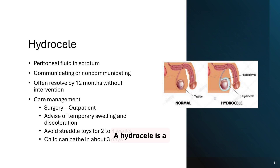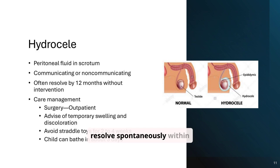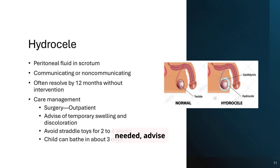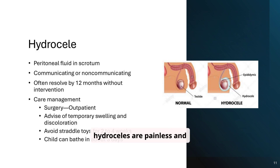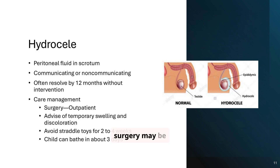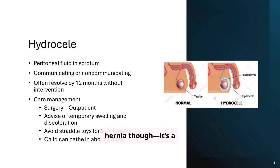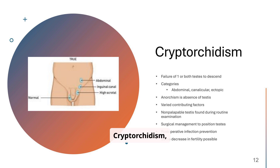A hydrocele is a collection of peritoneal fluid in the scrotum. Most hydroceles resolve spontaneously within the first year of life. If surgery is needed, advise parents about temporary swelling and activity restrictions post-op. Parents may panic seeing a swollen scrotum, but most hydroceles are painless and resolve by age one. If it persists or gets large, surgery may be needed. Always rule out a hernia — it's a surgical emergency if it's trapped.